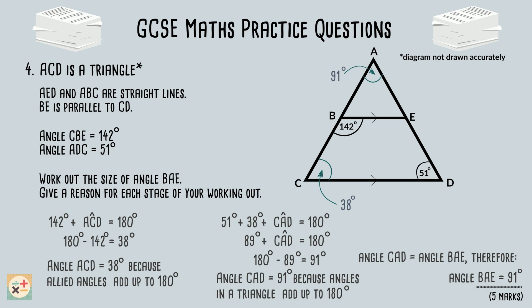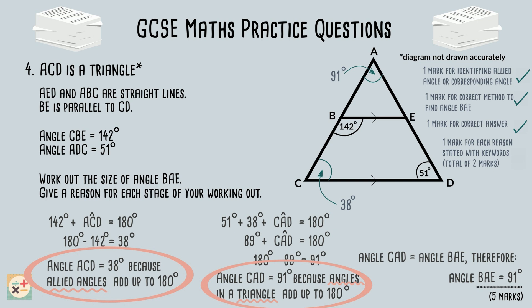This question is worth five marks awarded for the following. One mark for identifying the allied angle, or another relevant angle such as the corresponding angle here. One mark for using the correct numerical method for finding angle BAE. And one mark for each reason given, with the keywords clearly stated. In this example, we are awarded with one mark for using the allied angles rule as the reason for finding angle ACD, and another mark for using the angles in a triangle rule for finding angle CAD. So a total of five marks would be awarded here.